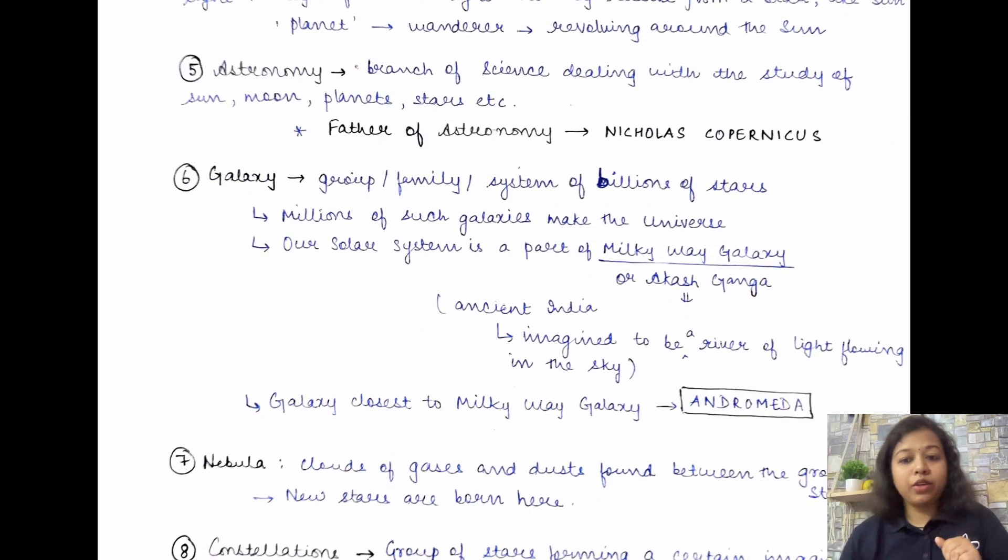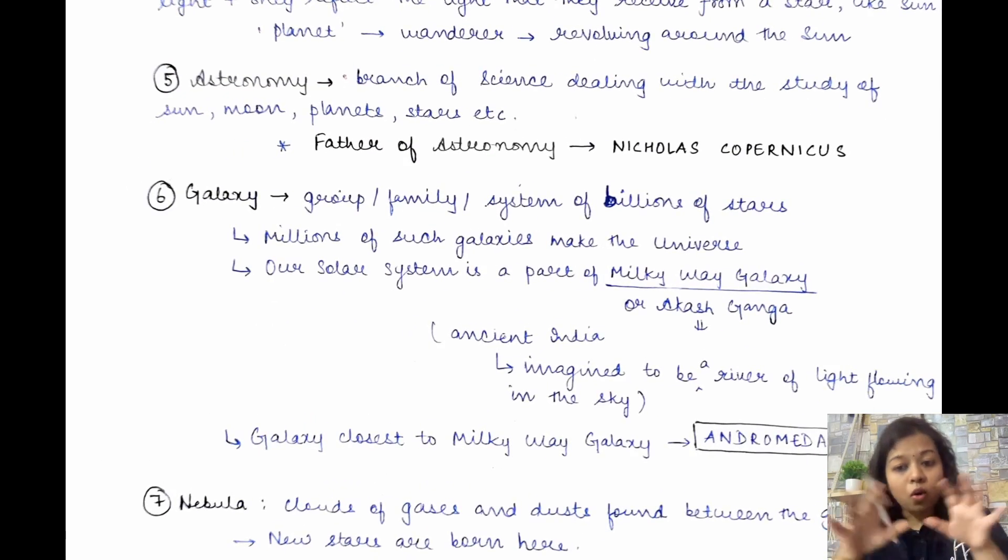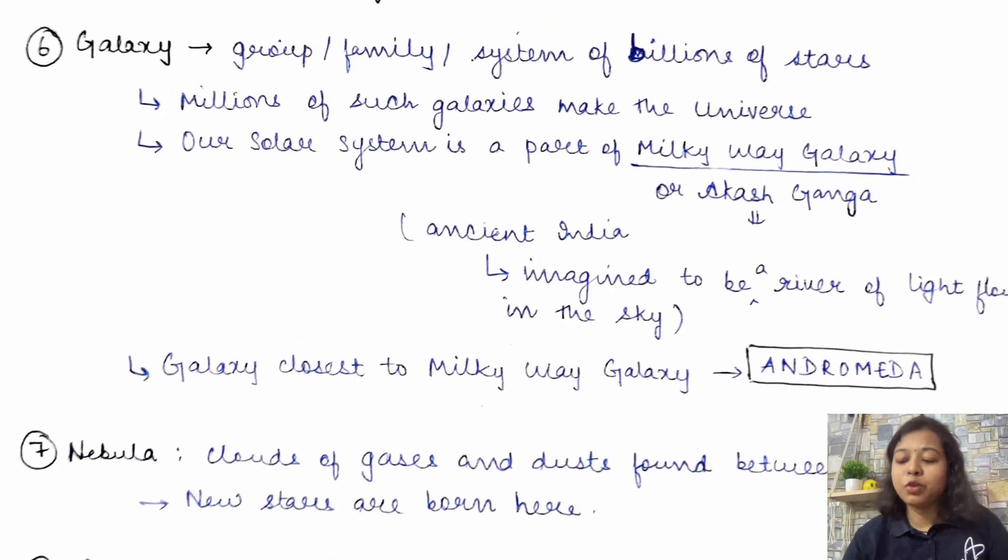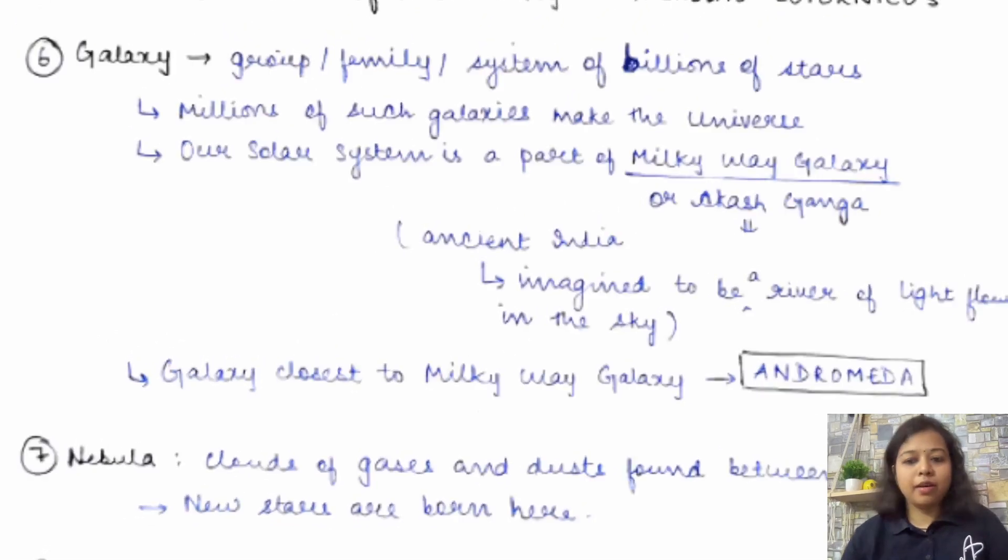Another term that I would like to introduce you to is the term astronomy. Now, what is astronomy? Astronomy is that branch of science which deals with the study of all of these things that we are now talking about. That is, your sun, moon, planets, stars, etc. Thik hai? Who is considered as the father of astronomy? These are little pointers which can help you anywhere in any kind of examination. So, you never know what kind of static questions you will figure out in, let's say, appearing for any of those. So, just be prepared with all of that. But, Nicholas Copernicus is considered as the father of astronomy.